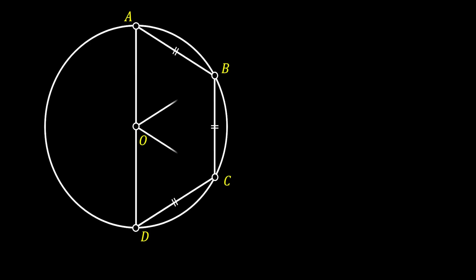Let's pull lines OB and OC. Since lines AB, BC, and CD are equal, the arcs AB, BC, and CD must be equal as well. From this, we can conclude that the angle at point O is divided into three identical angles of 60 degrees. Since OA, OB, and OC are radii of our circle, those three triangles are congruent isosceles triangles with a 60-degree angle at the apex, meaning those three triangles are actually equilateral triangles.